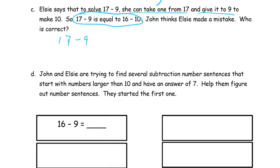17 minus 9 is 10 and 7. There's 1 left when I take from that 9. So this is going to be equal to 8. And then 16 minus 10 — well, that's 10 and 6. If I'm taking 10 and take 10 from the 10, there's only 6 left. So that equals 6. They're not the same, are they? Who is correct? We don't even have to know what Elsie's mistake is — we can just see that they're not the same, so she can't be right. So John is correct. Elsie made a mistake.